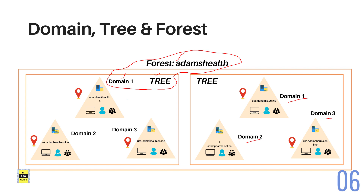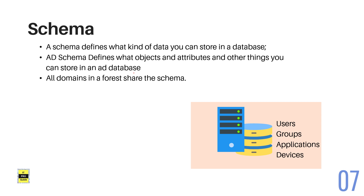If you want to add a new domain controller to the same forest, there is an option when you install Active Directory to either add the domain controller to an existing forest or add it to a new forest — we will be seeing this soon. When we speak about forest, we said it shares the same schema. So what is a schema? A schema defines what kind of data you can store in a database — similar to defining integer, string, or date columns in a database table. The AD schema defines what objects, attributes, and other things you can store in an Active Directory database. All domains in a forest share the same schema.